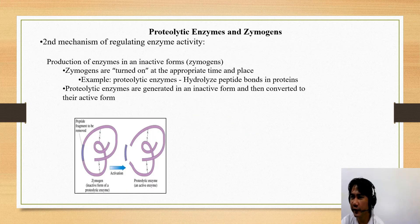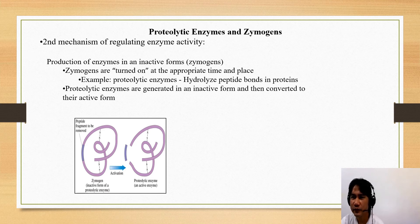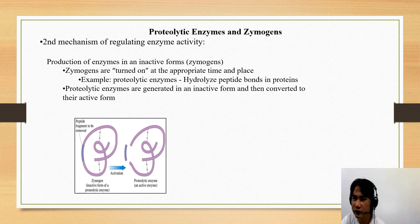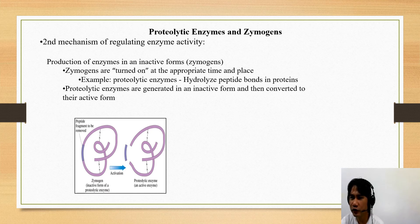We'll see proteolytic enzymes and zymogens, which are considered the second mechanism of regulating enzyme activity. Zymogens are enzymes that are generated as inactive but are turned on or activated at the appropriate time and place. Most of the proteolytic enzymes — enzymes that hydrolyze peptide bonds — are generated as inactive in the pancreas, and once brought to the site of action, they are converted to active form.